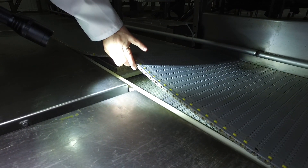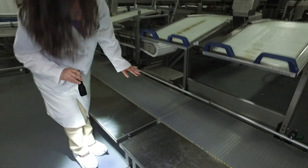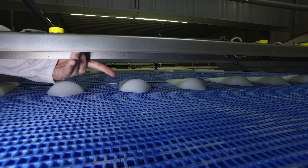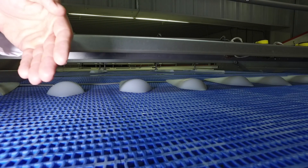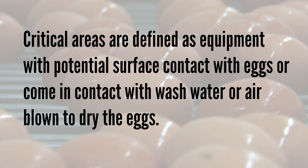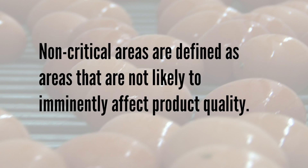So what is organoleptic inspection? Organoleptic inspection assessments include sight, smell, and touch. However, microbial growth will not always be seen, smelled, or felt. Critical areas are defined as equipment with potential surface contact with eggs, or that come in contact with wash water or air blown to dry the eggs. Non-critical areas are defined as areas that are not likely to imminently affect product quality.